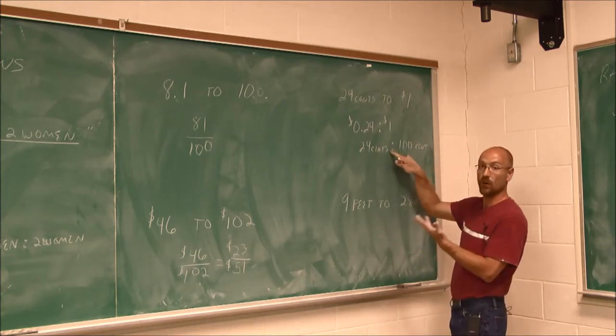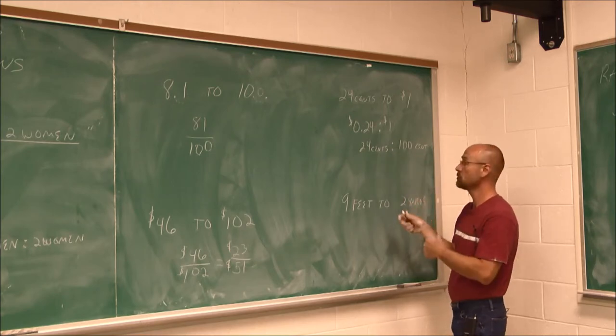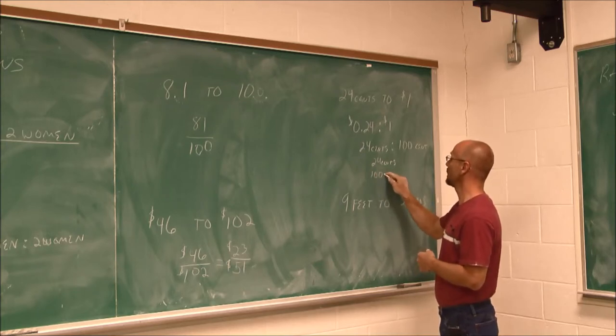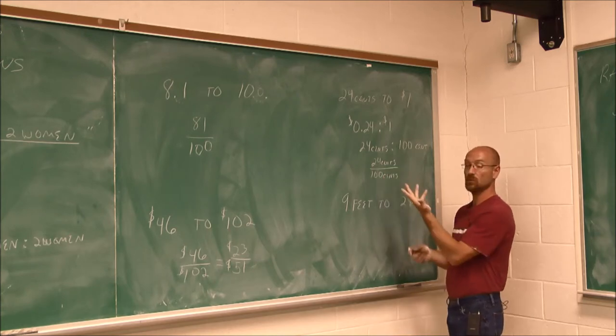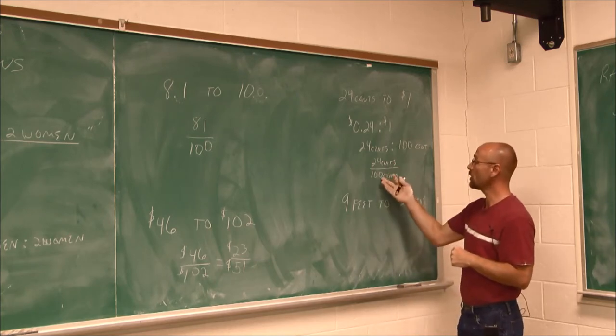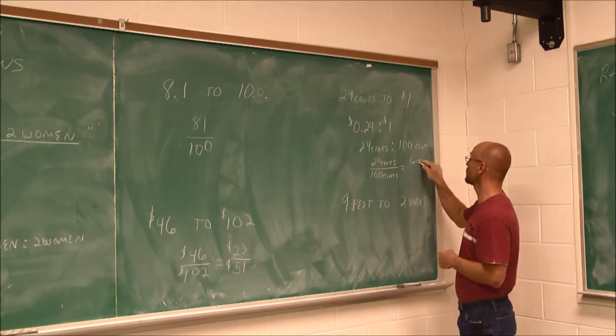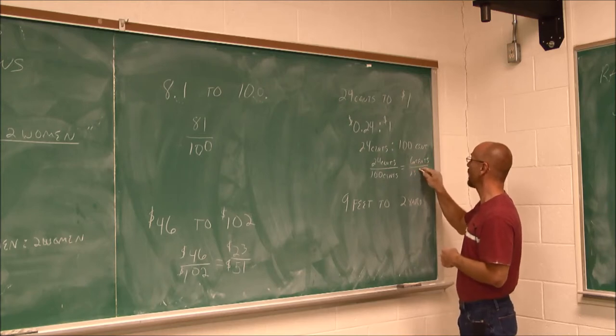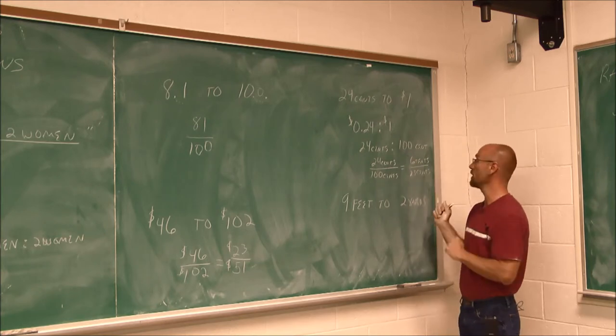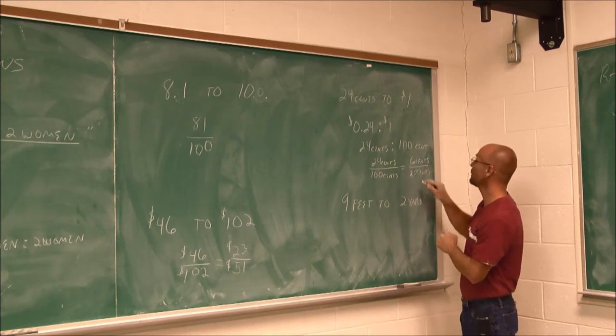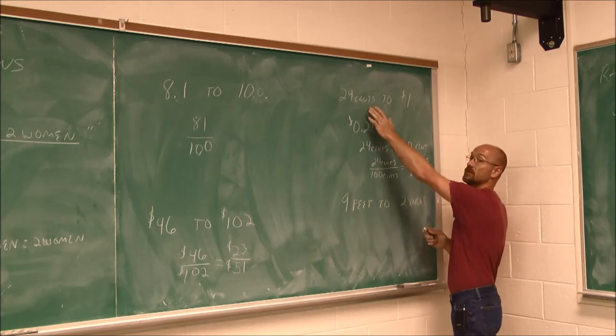Now this is the form that I'd have to convert it to in order to use the fraction. 24¢ to 100¢, because this is something I can reduce. As a fraction, we always want to reduce. 24¢ and 100¢ are both divisible by 4. So I would get 6¢ per 25¢. I apologize for the handwriting. We're getting close to the edge of the board here. So 25¢ would be the same as this ratio.